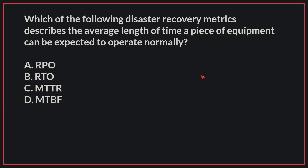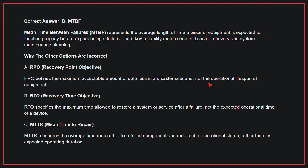Which of the following disaster recovery metrics describes the average length of time a piece of equipment can be expected to operate normally? The correct answer is D: MTBF. Mean Time Between Failures represents the average length of time a piece of equipment is expected to function properly before experiencing a failure. It is a key reliability metric used in disaster recovery and system maintenance planning.